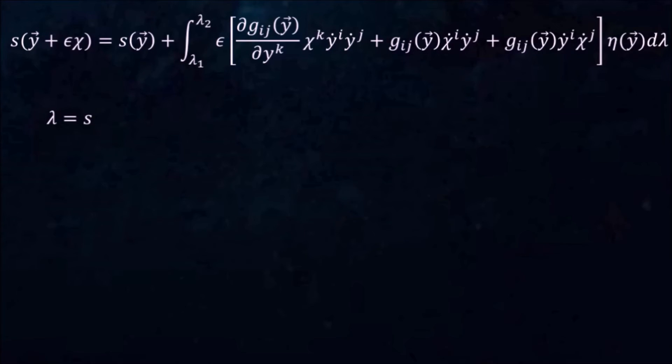To see this, simply plug in the expression for ds in terms of the metric and the components of x dot of an arbitrary curve x. ds appears on both sides so we can cancel it out. What's left is this. But this is just the inverse of eta. So eta must be 1.